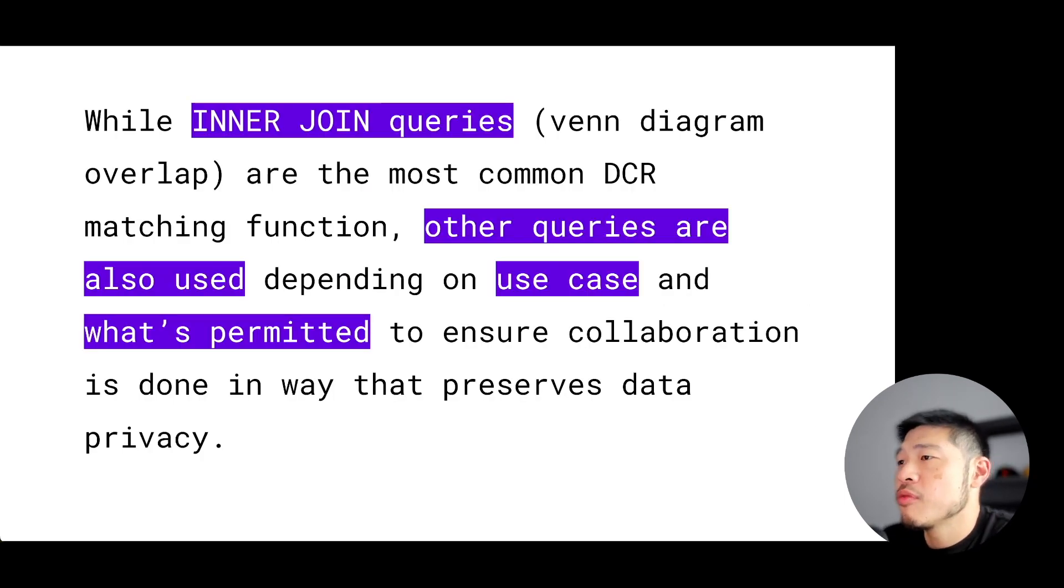And while Venn diagram overlaps or what's called inner join queries are the most common DCR matching function, other queries are also used depending on the use case, as well as what's permitted to ensure that the collaboration is done in a way that preserves data privacy. And what's permitted can be based on the user settings when setting up the DCR instance or the data sets that are actually being used.